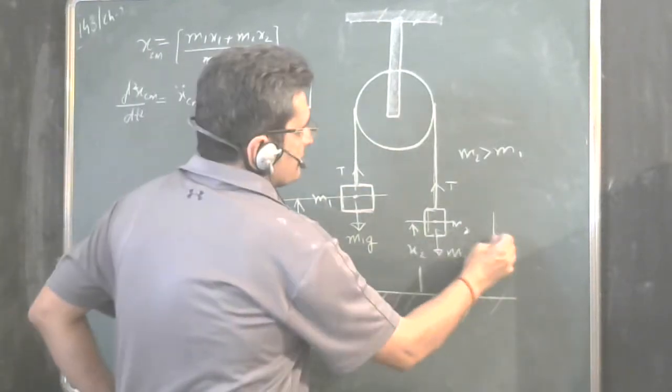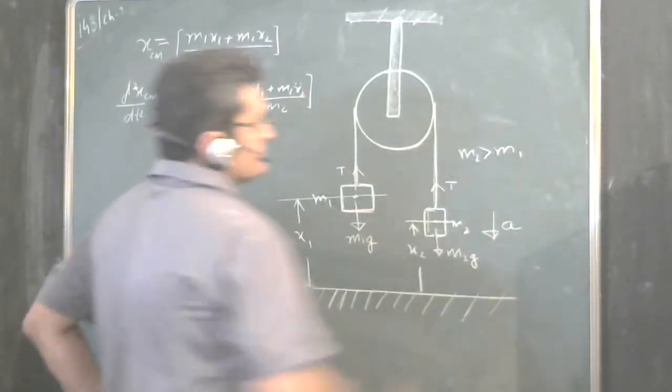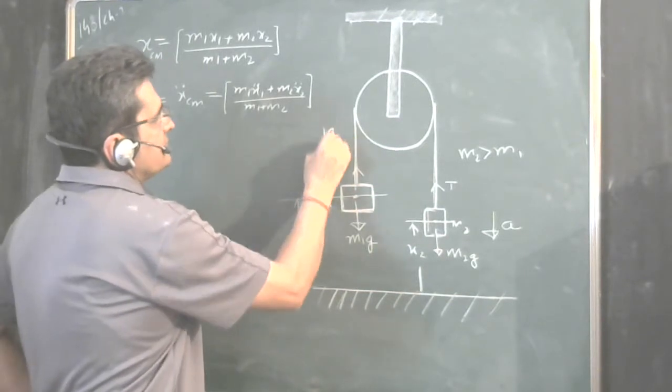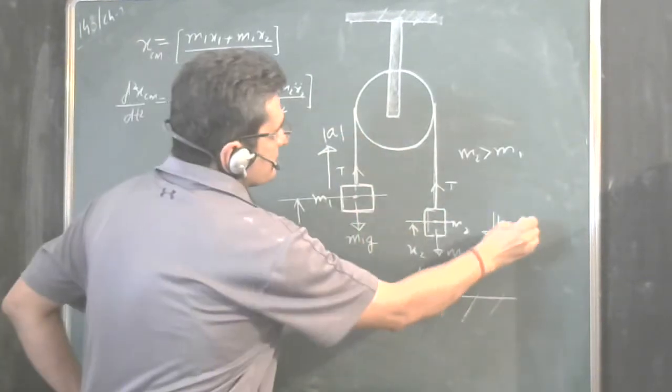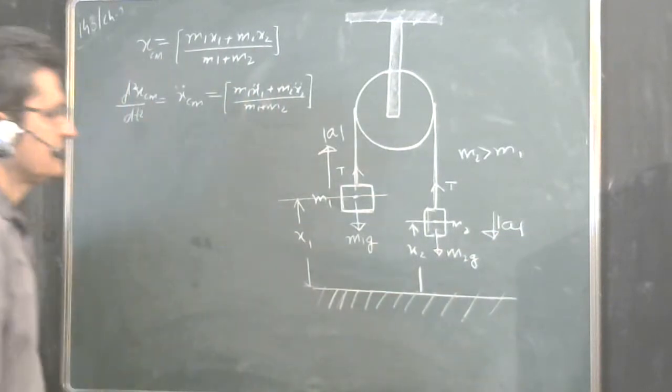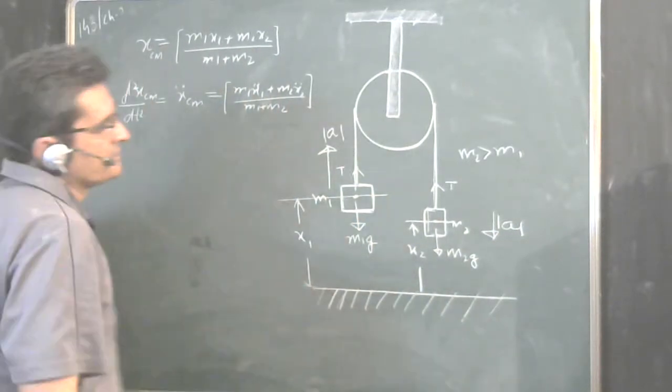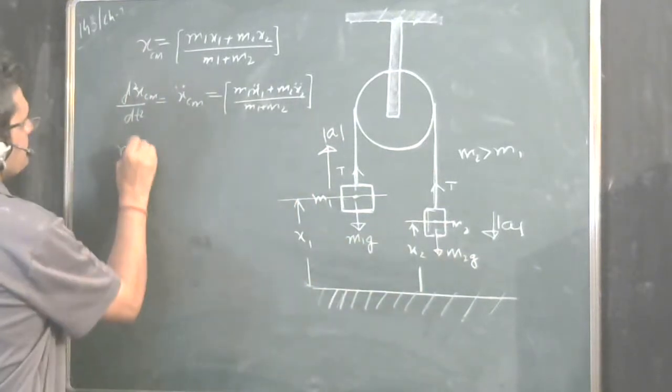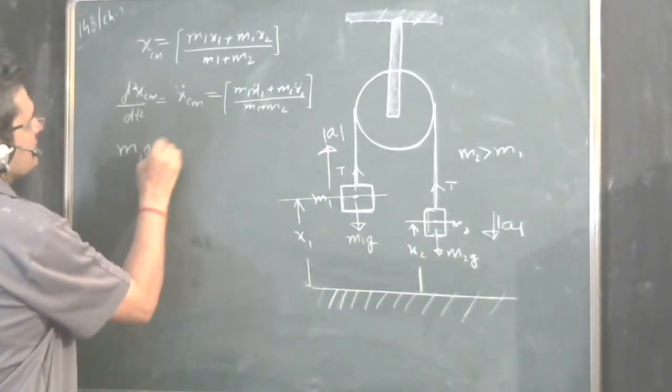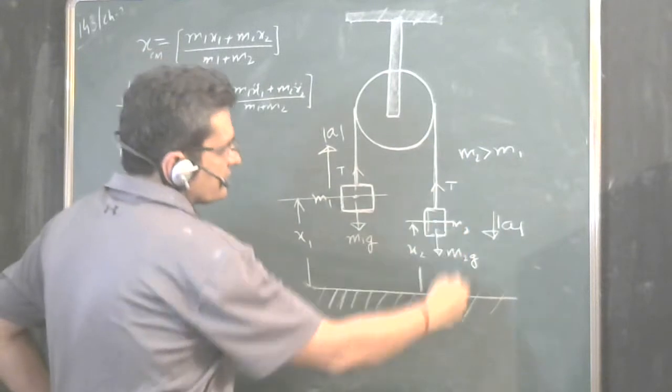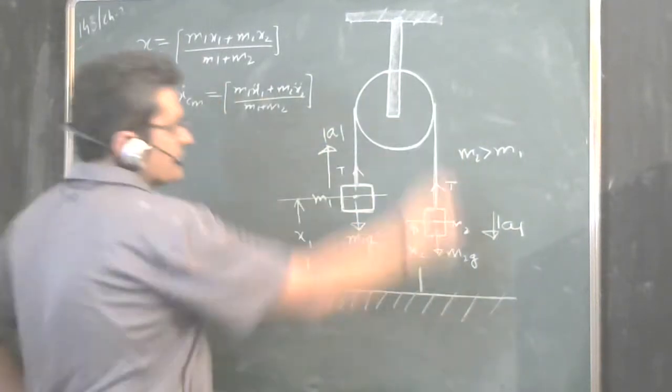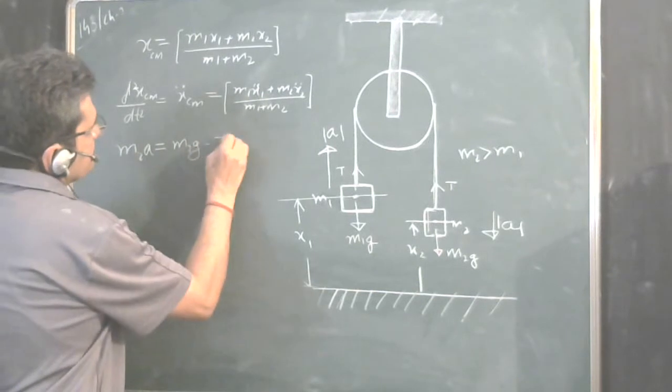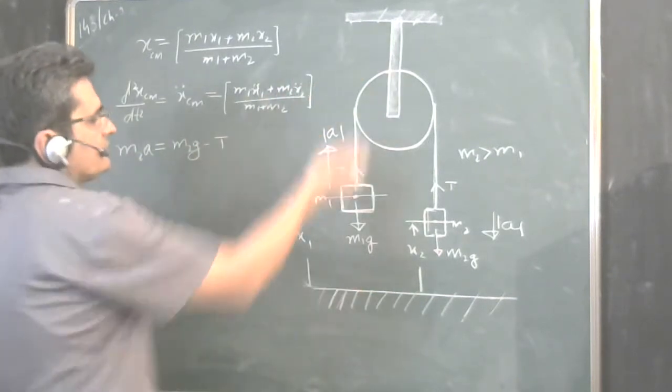Let us see, let this acceleration be A. This acceleration will also be A. This is the magnitude of acceleration. Direction is opposite in both the cases. So, now, let us write equation for this. M2a, mass into acceleration would be equal to the net force. Net force is downwards because we are saying it is moving downwards. M2g minus T.